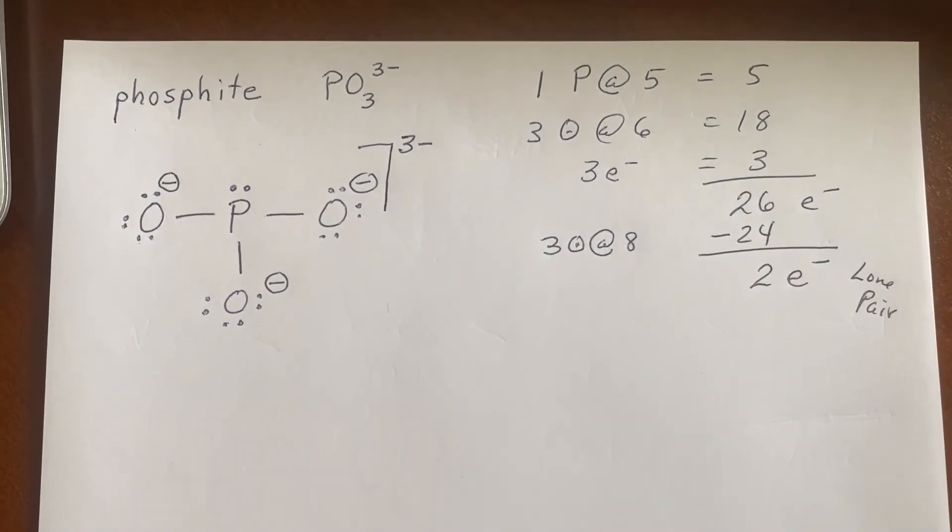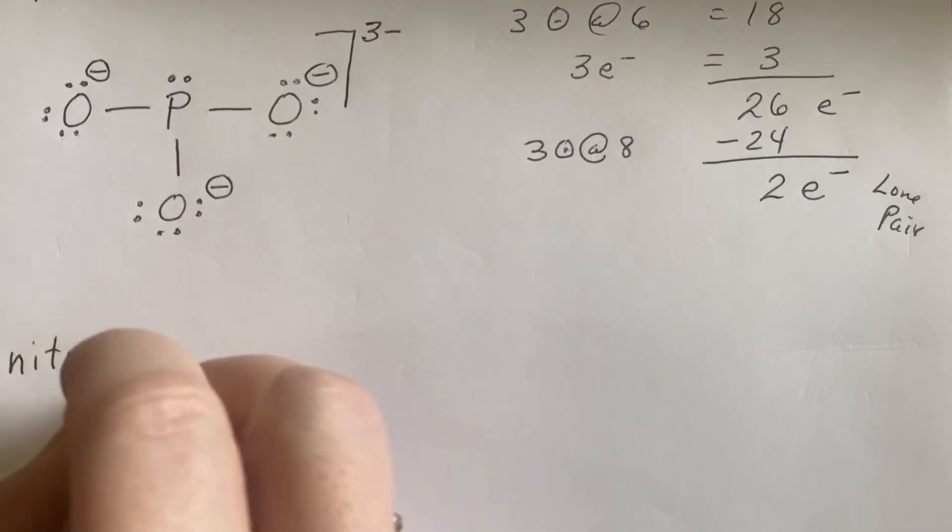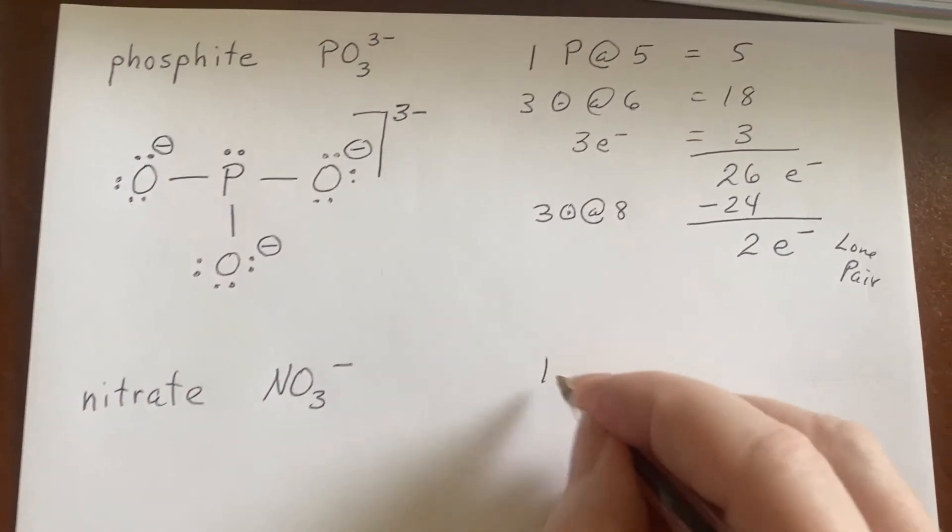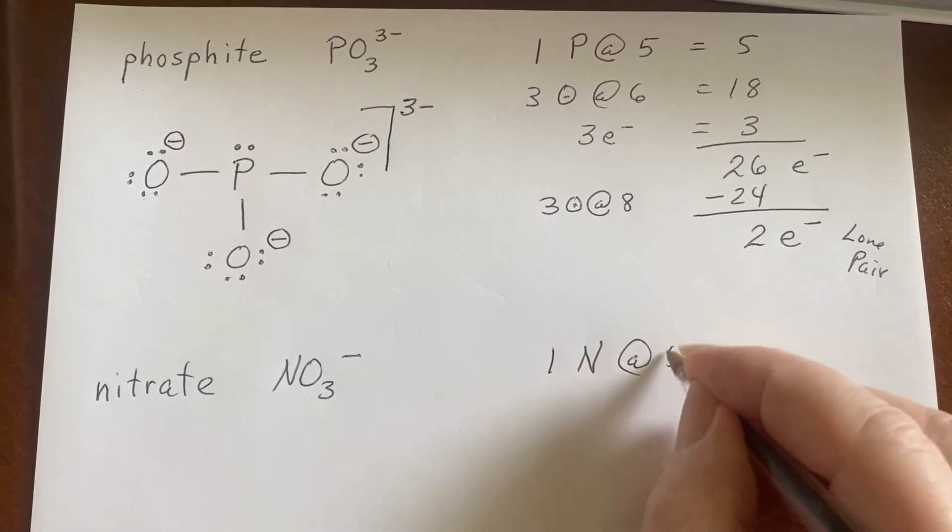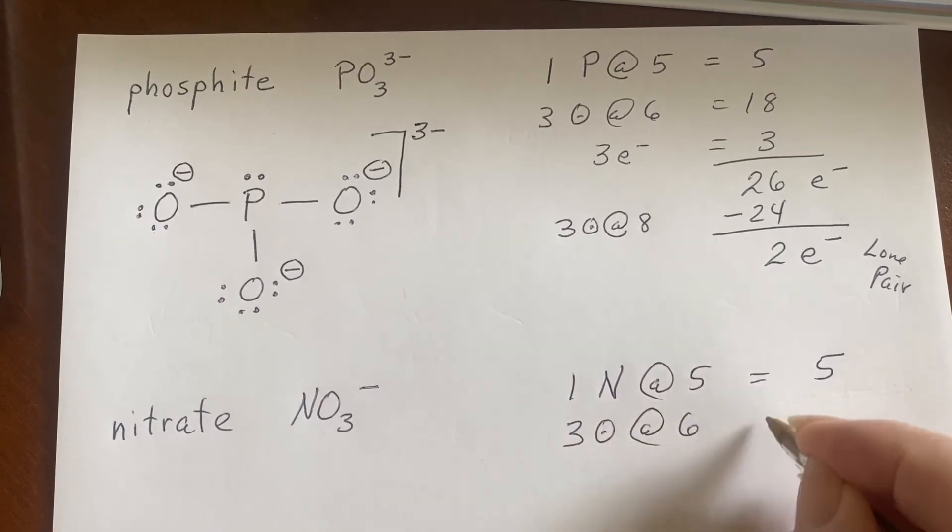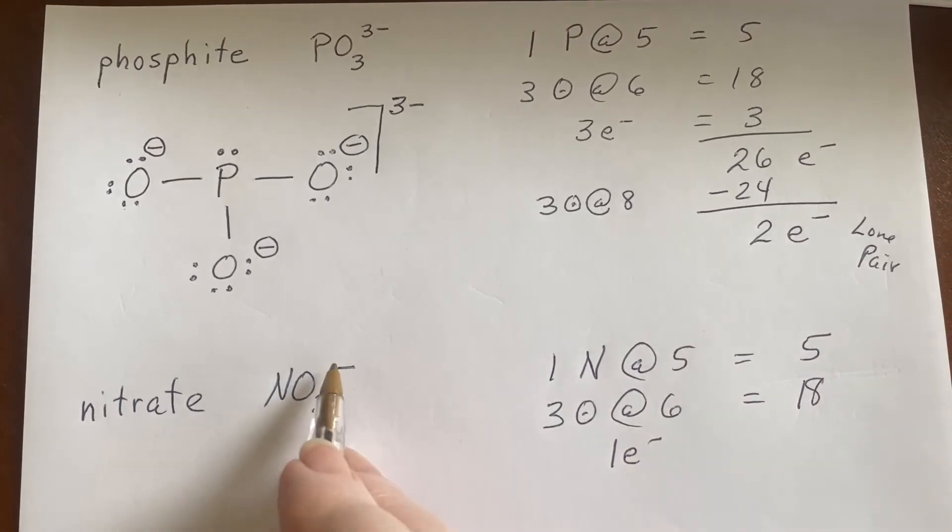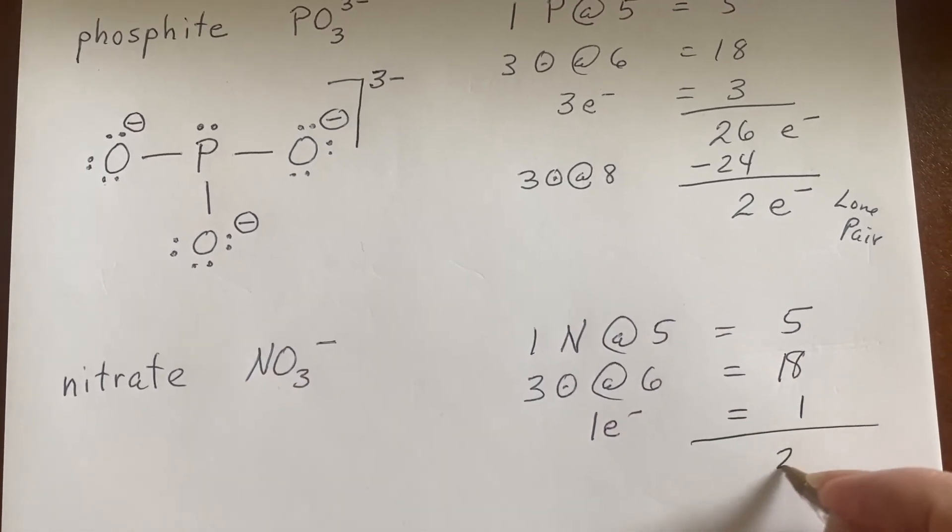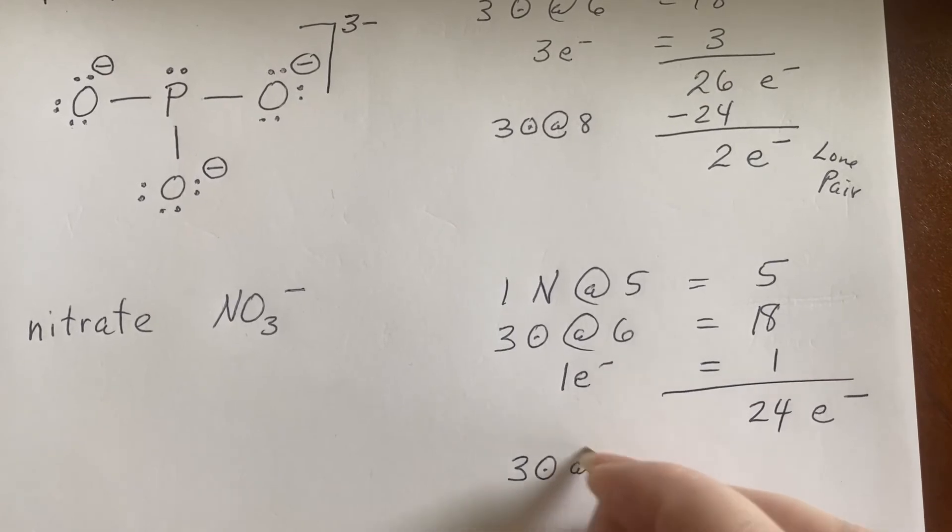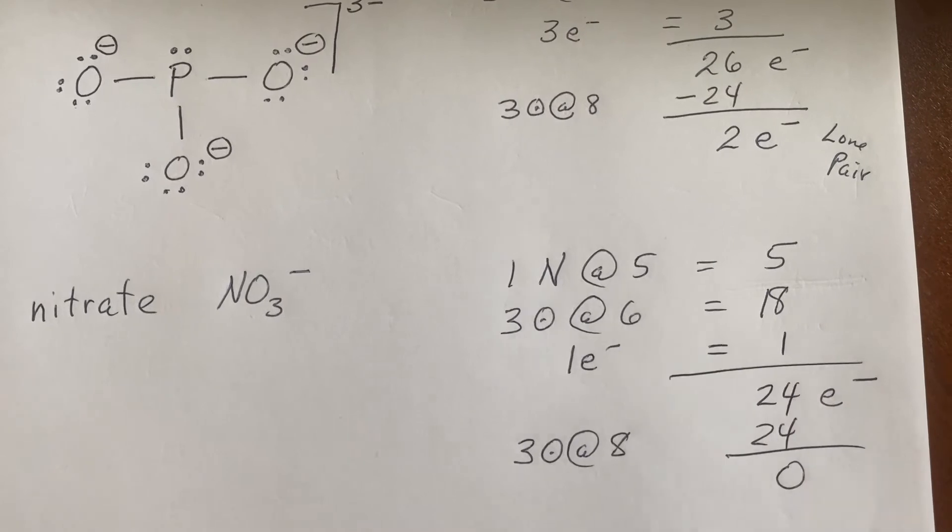Now let's do one more that I often get asked about. And that is nitrate. Nitrate is NO3^- and it has a single negative charge. So once again, one nitrogen at five. The three oxygens are each going to bring in six. So that's 18 and one more electron for the charge. So overall we have 24 electrons to place. There are not going to be any lone pairs because the three oxygens each come in, grab their eight and leave nothing behind. So no lone pairs.